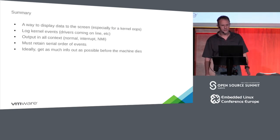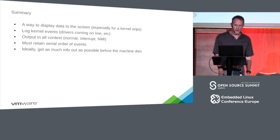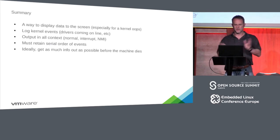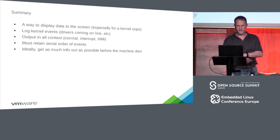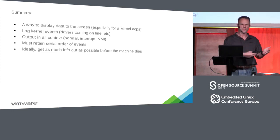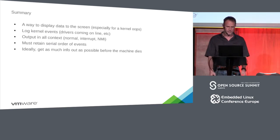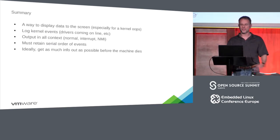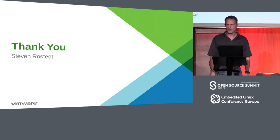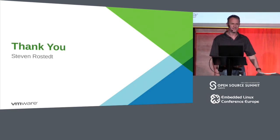Summary: printk is a way to display information — kernel events and everything else the kernel wants to tell you about. printk must retain serial order, which is why the log_buf is a single buffer. We talked about having multiple buffers, but people want the order of when the printk happened preserved across all printks. And ideally, we want as much information as possible before the machine dies. Thank you.